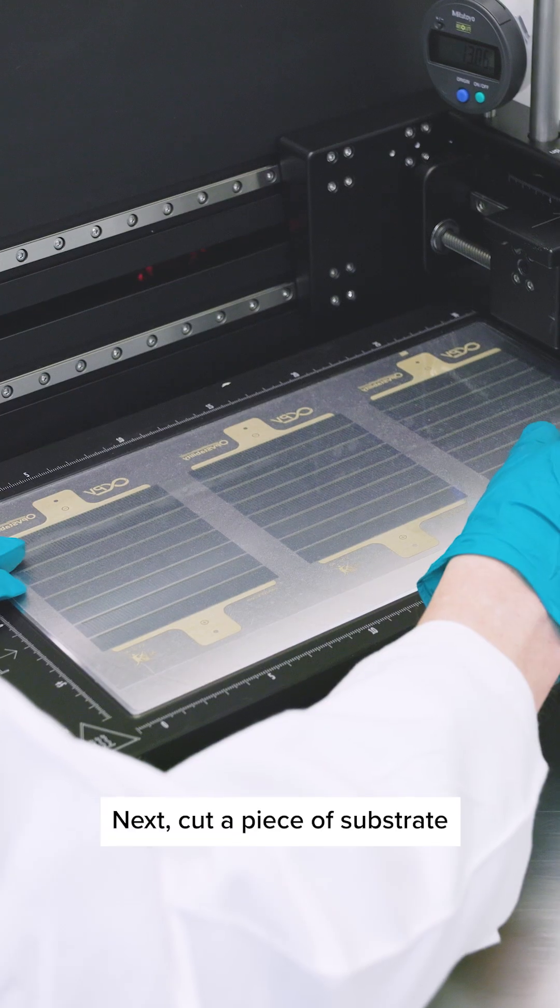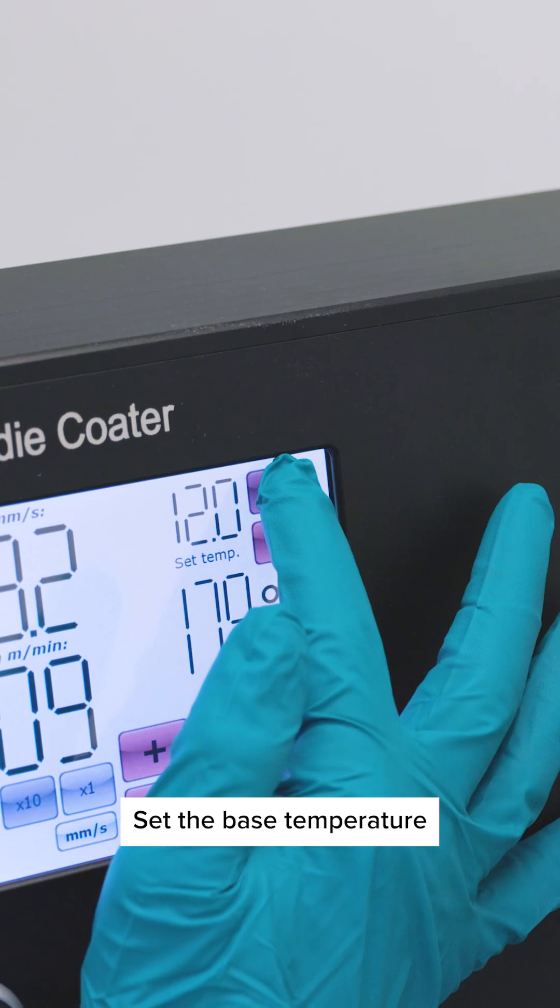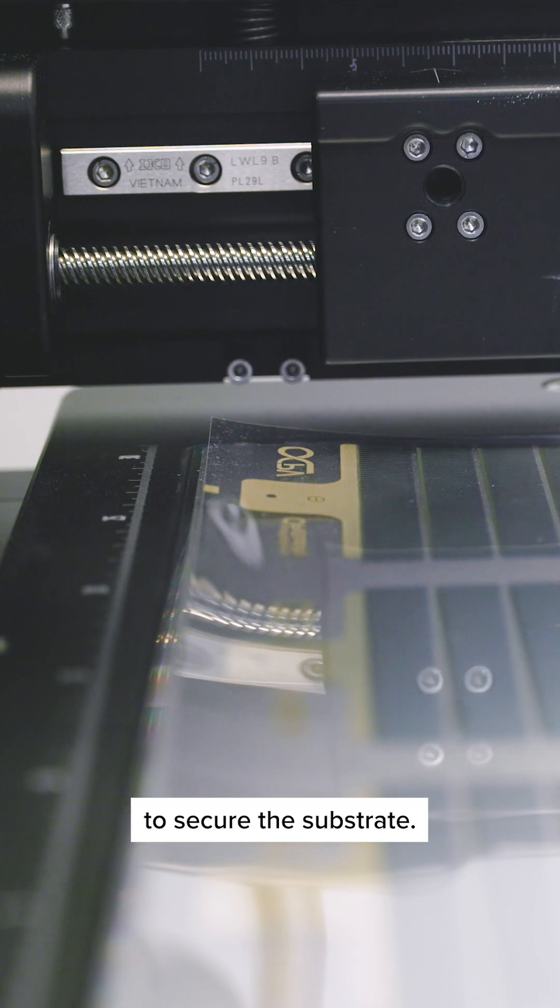Next, cut a piece of substrate and place it on the vacuum chuck. Set the base temperature and turn on the vacuum chuck to secure the substrate.